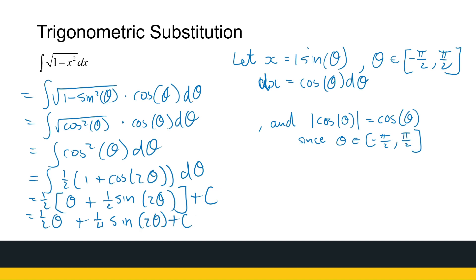We're not finished — we need to convert back into terms of x, since the original question was in x. From x equals sine theta, we get theta equals arc sine of x. Sketching a right triangle with sine theta equal to x over 1, the adjacent side is the square root of 1 minus x squared. So we have theta expressed in terms of x.